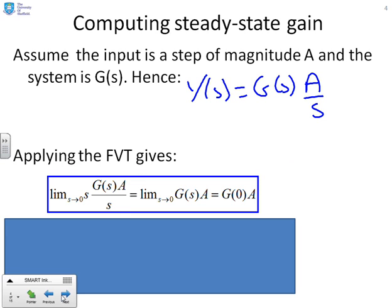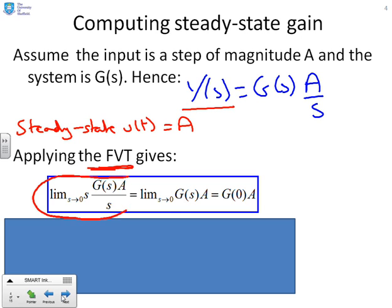To find this, we need the steady state of Y — we already know the steady state of U is A. We use the final value theorem: the limit as S goes to zero of S times G of S times A over S. Cancelling the two S's gives the limit as S goes to zero of G of S times A, which is G of zero times A — equivalent to the limit as T goes to infinity of Y of T.